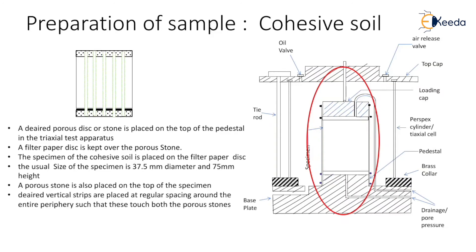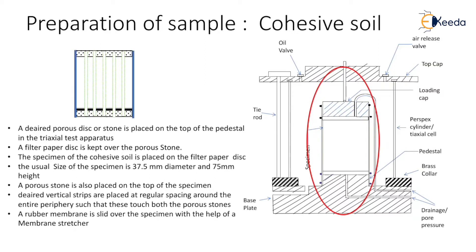Vertical filter strips are placed at regular spacing around the entire periphery such that they touch both the porous stones. A rubber membrane is slid over the specimen with the help of a membrane stretcher, so the specimen is completely surrounded by the rubber membrane. This membrane is sealed to the specimen with the help of o-rings.